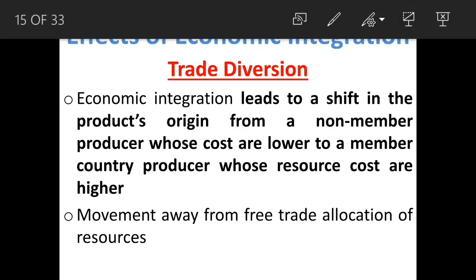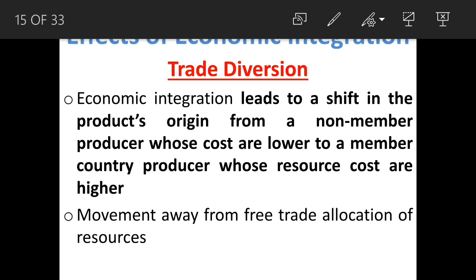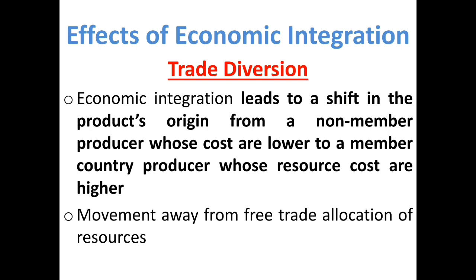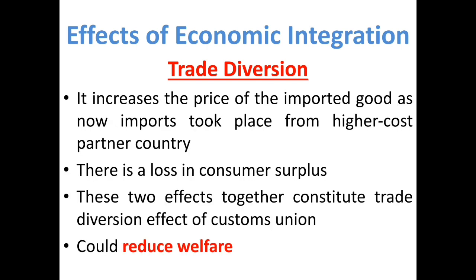Now shifting our focus to trade diversion. Trade diversion is when economic integration leads to a shift in a product's origin from a non-member producer whose costs are lower to a member producer whose resource costs are higher. It is a movement away from the free trade allocation of economic resources — an efficient non-member producer is replaced by a less efficient, costlier member producer. It increases the price of imported goods, and there is a loss in consumer surplus. These two effects together constitute the trade diversion effect of the customs union, which will reduce welfare.